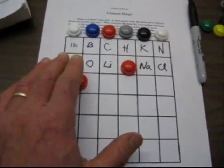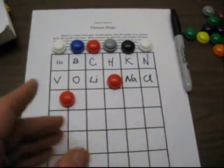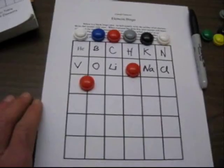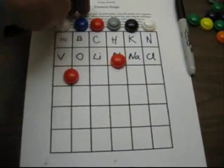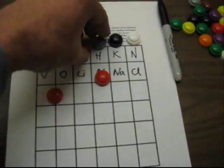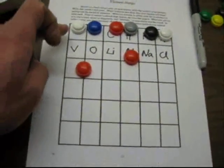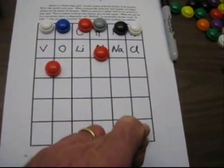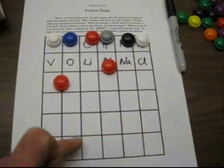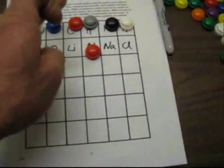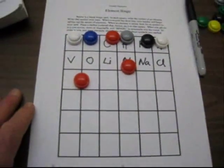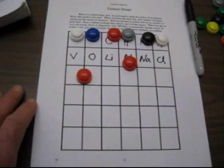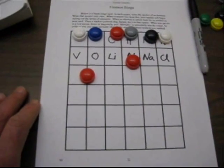You can play straight bingo, where you get six in a row, six down, six diagonally. Or if you like, you can kind of make it more fun. And you can play picture frame, where you have to get all the squares around the outside. You can play different letters, shaped letters on the card. The object of the game, obviously, is just to have fun.